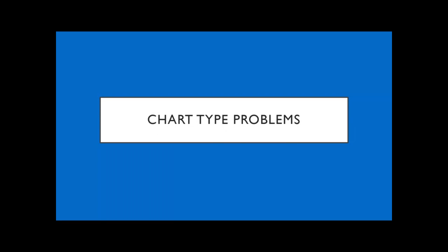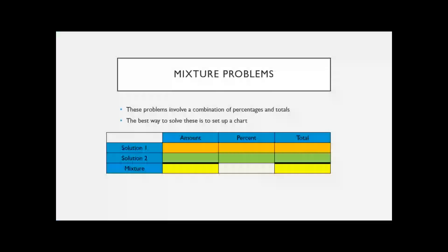The last category is chart-type problems, which are more advanced and usually involve more than one equation. We can turn them into a single equation — or an easier two-equation setup — by making a chart. The first type I'll cover are mixture problems, which most people hate. These involve multiple percentages.